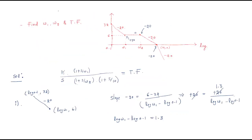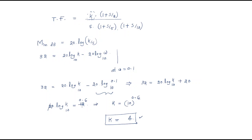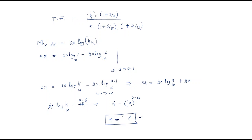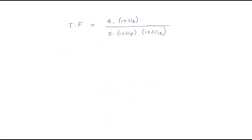To summarize: whenever a Bode plot is given and you need to find the corner frequencies and transfer function, use the slope formula (y2 − y1)/(x2 − x1) to find w1 and w2. Then use a known magnitude in dB at a specific frequency to find k. Here k = 4 with 32 dB at ω = 0.1 rad/s. I hope you all understood this session. Thank you.